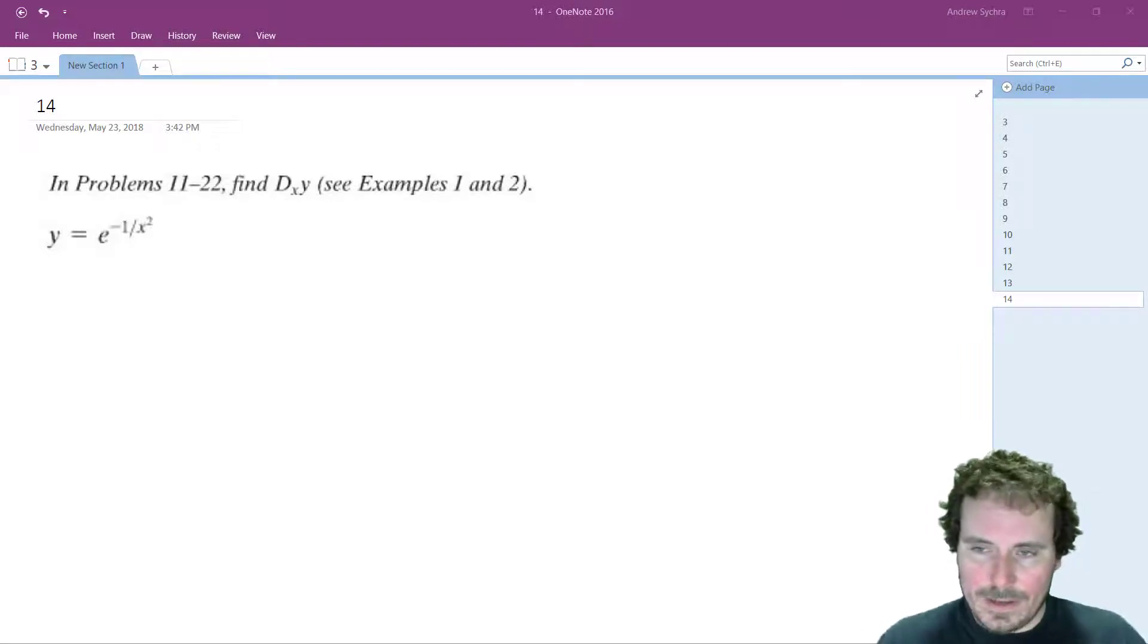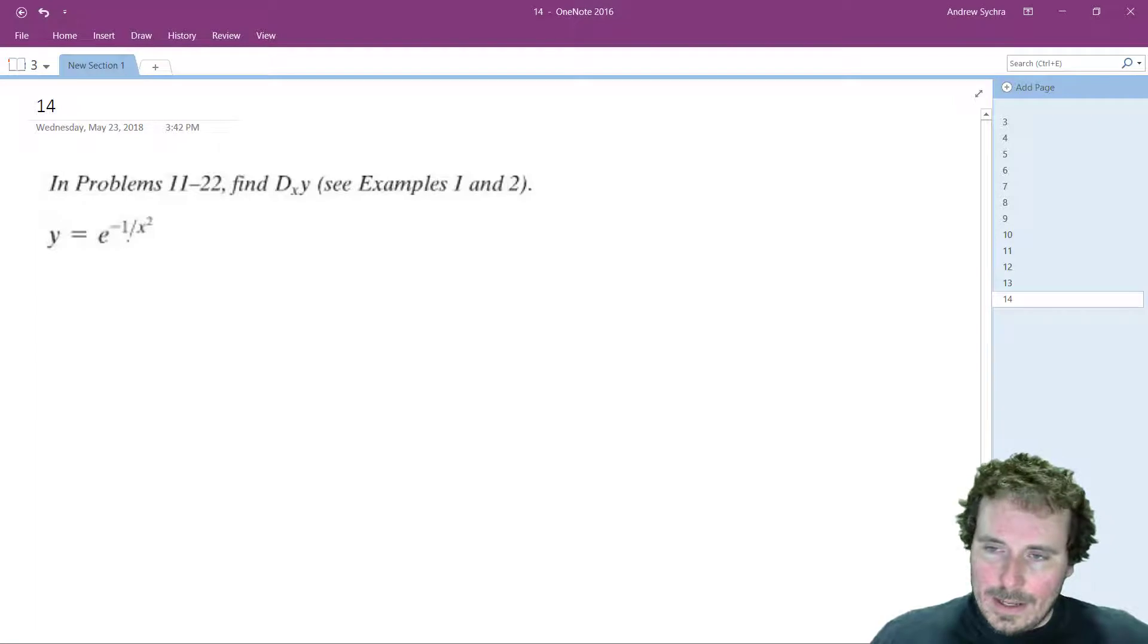Alright, so I'm going to take the derivative of e raised to the negative 1 over x squared. And what this is going to be, I'm going to rewrite this as e raised to the negative x raised to the negative 2.